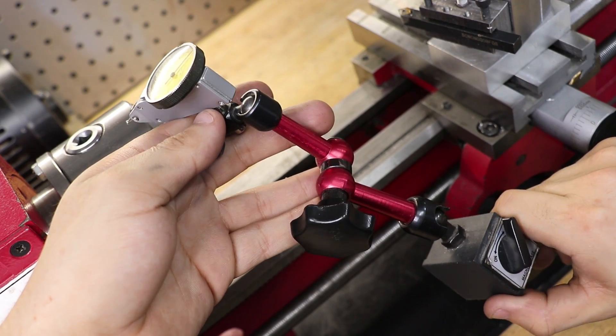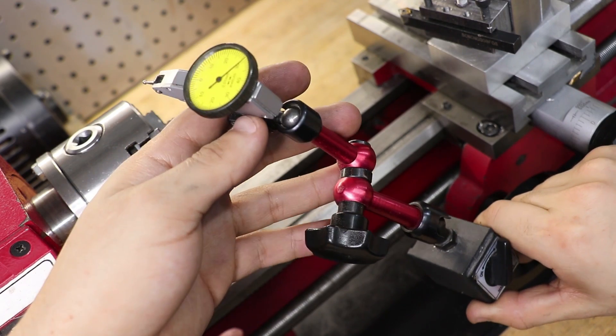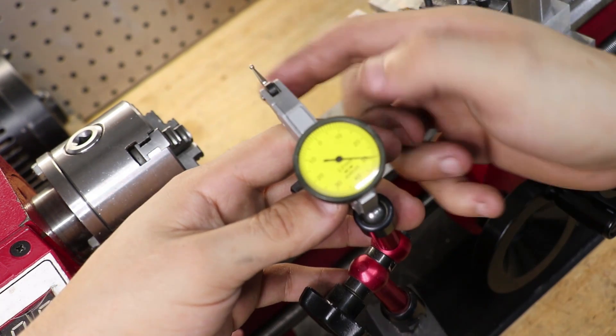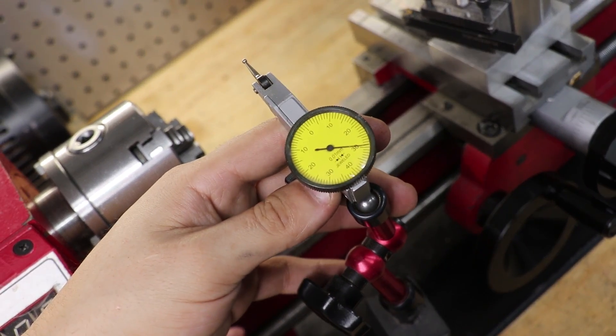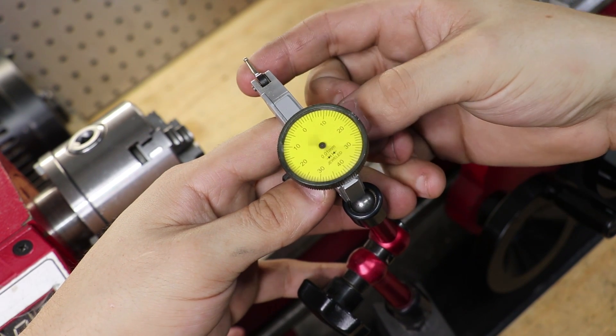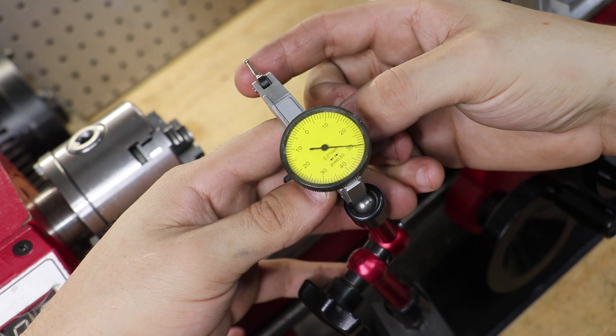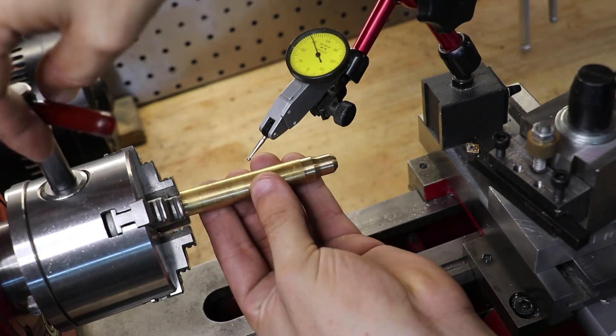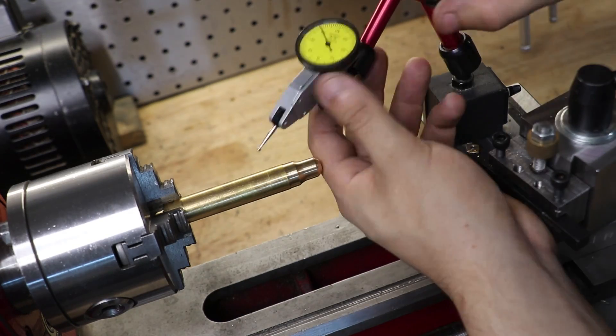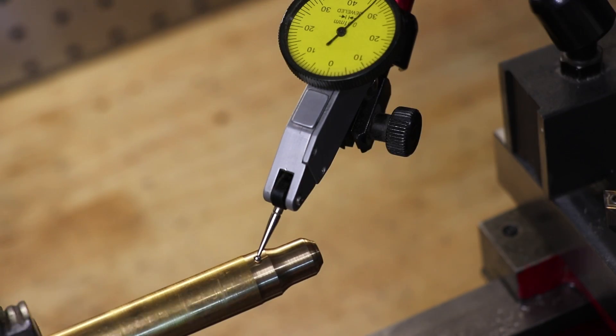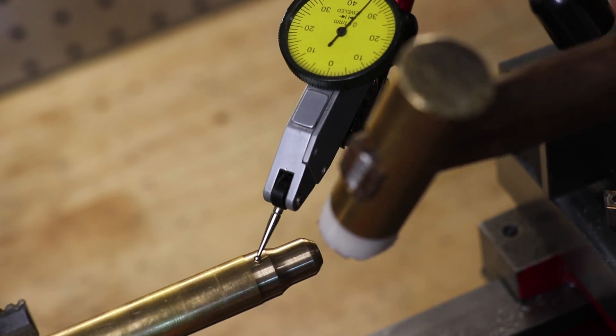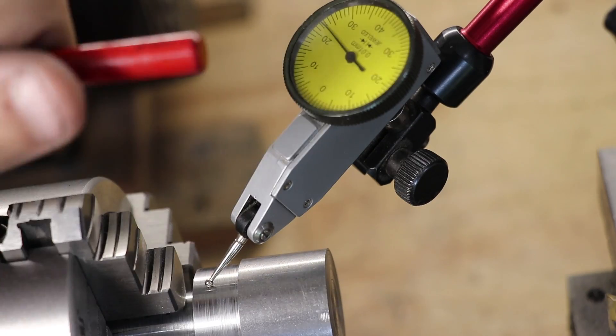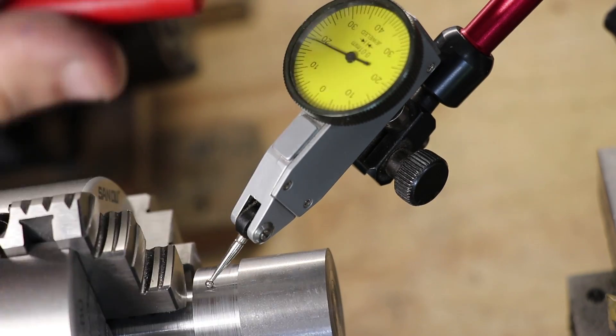So the first one that I got was a dial indicator and I got that more than a year or so after I got the lathe. This one here is a dial test indicator and even the inexpensive ones are pretty accurate to one one hundredth of a millimetre and they're really useful when dialing in work. Even with a scroll chuck, these can be pretty useful for dialing in work. And of course if you get an independent four jaw chuck, these are a must-have item to help you really dial in the part.